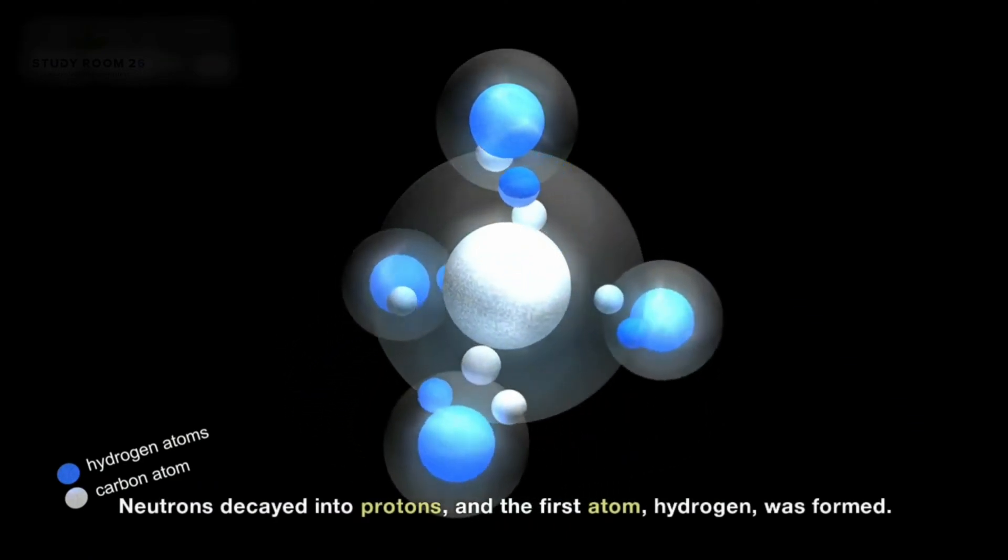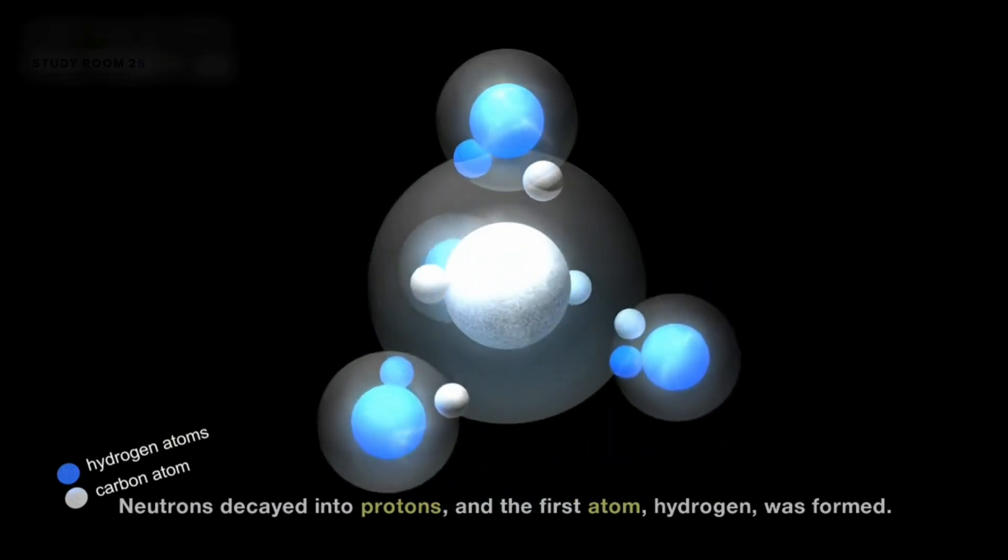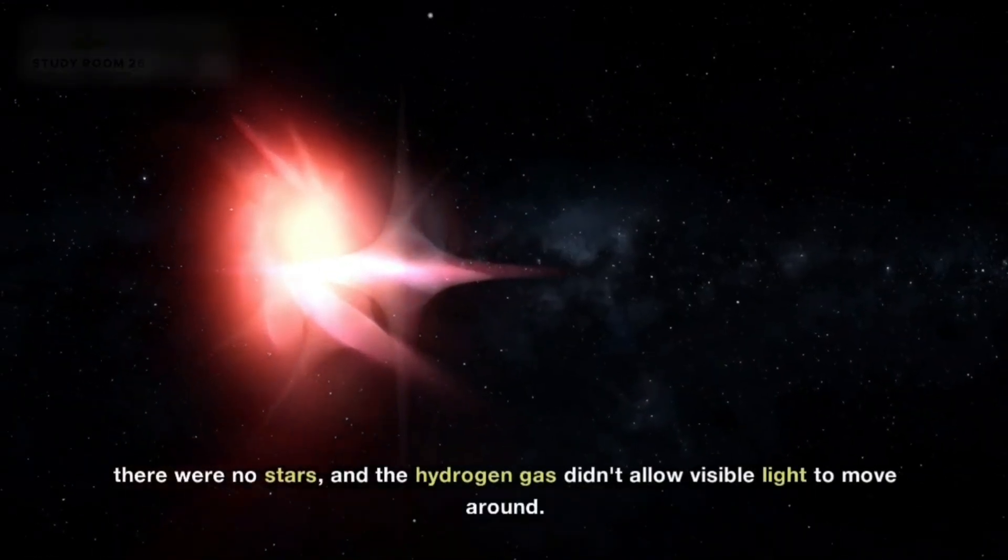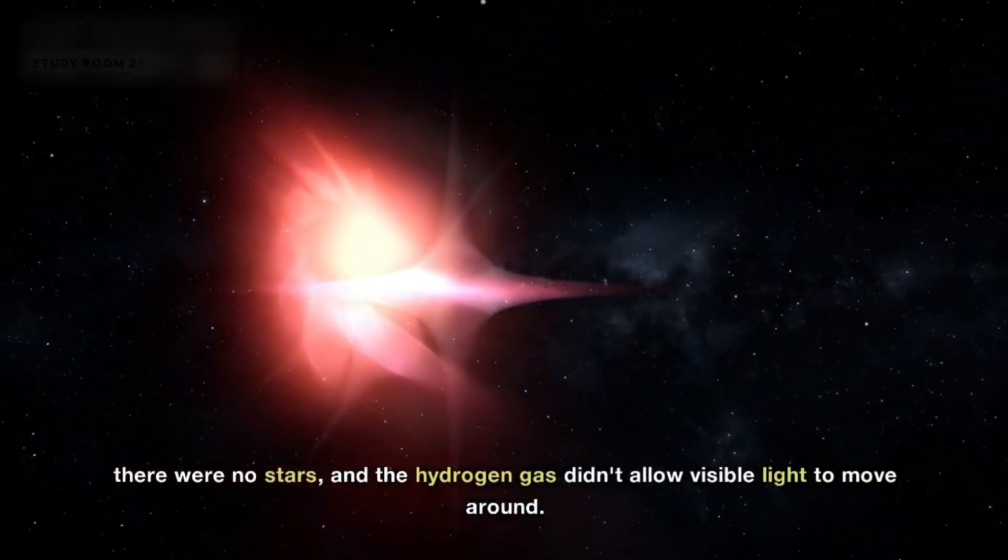Neutrons decayed into protons, and the first atom, hydrogen, was formed. During a period known as the Dark Age, there were no stars, and the hydrogen gas didn't allow visible light to move around.